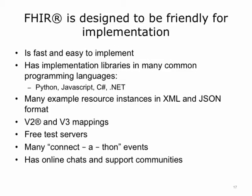FHIR is designed to be fast and friendly for implementation. Developers can have simple interfaces working in a day. FHIR has implementation libraries in many common programming languages, such as Python, JavaScript, .NET, and C#. These libraries mean that source code is freely available and developers can use it in their products. Many example resource instances are provided to kickstart development, and free test servers are available for developers to experiment. There are also connect-a-thon events happening around the world where developers come together and field test the standards. The specifications are easy to read, and communities exist for developers to ask questions and exchange ideas. FHIR programmers find problems as they implement, and the standard is then quickly fixed to support the development community.